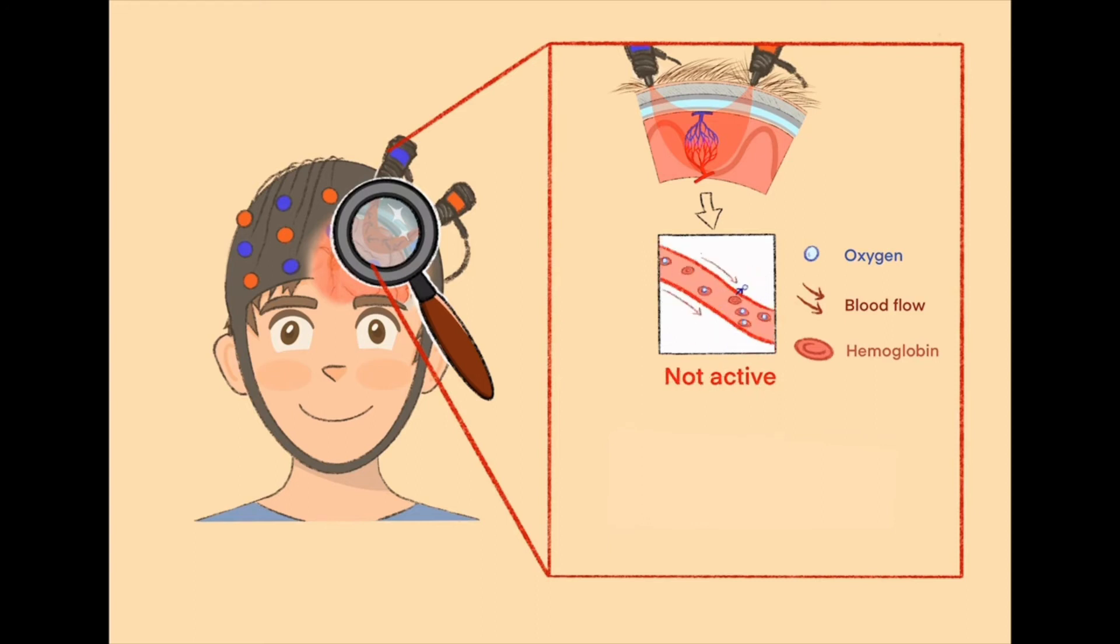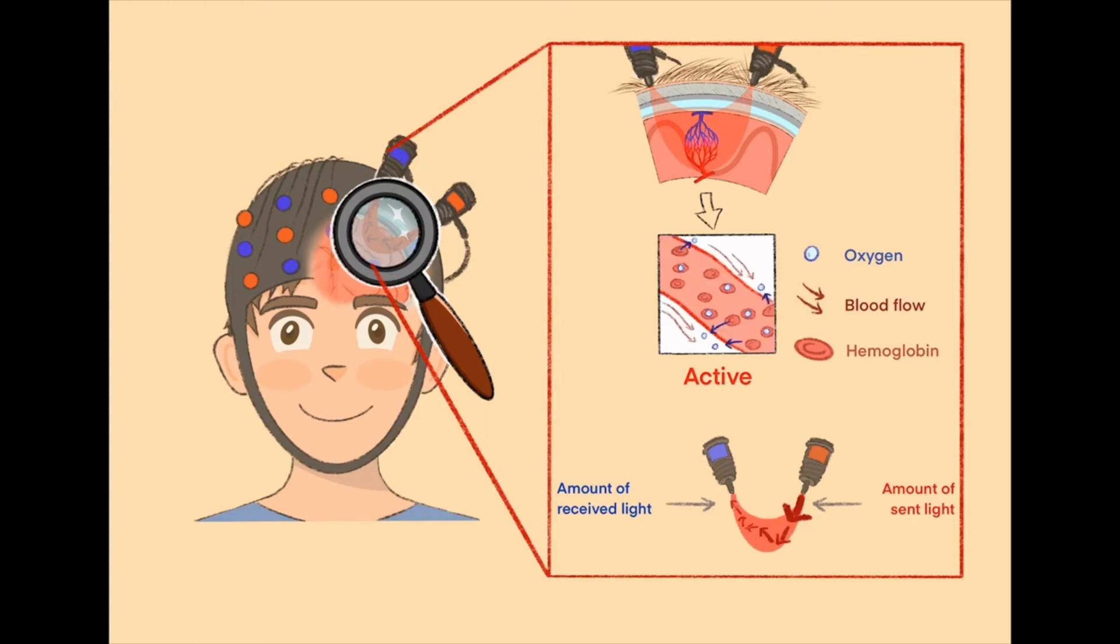This change in oxygenated hemoglobin is what you can see with fNIRS. This is because oxygenated hemoglobin swallows or absorbs some of the light. When there is more of it, more light is swallowed on its journey through the head.